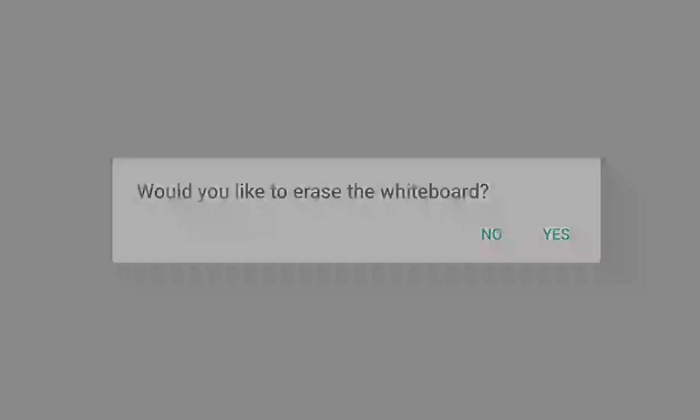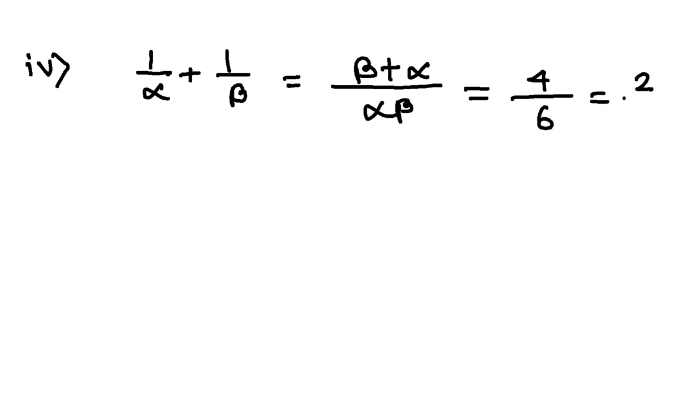Now moving on. The fourth one was, this is very important, 1 by alpha plus 1 by beta. So here, what is the LCM? Alpha beta, beta plus alpha. Alpha plus beta is again 4 and alpha beta is 6, that is 2 by 3.